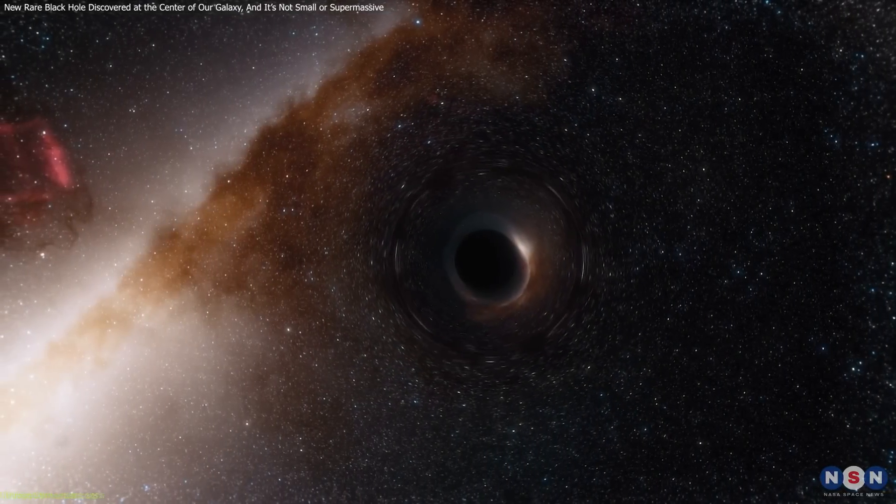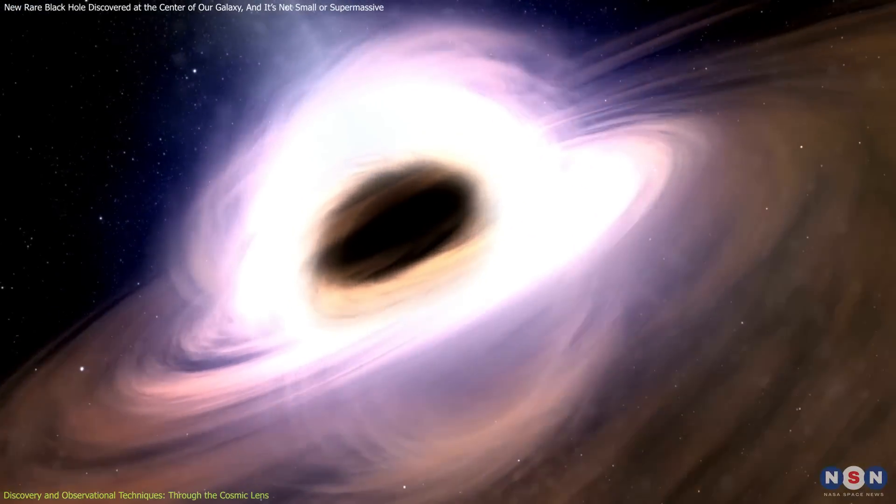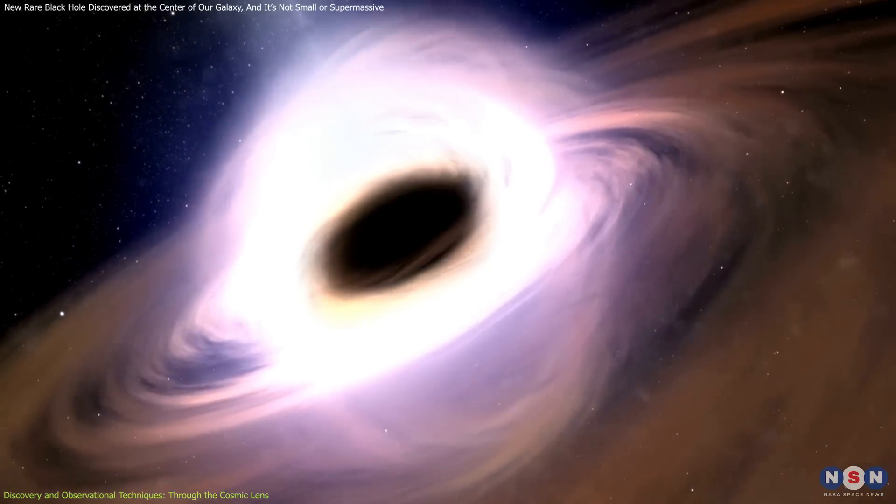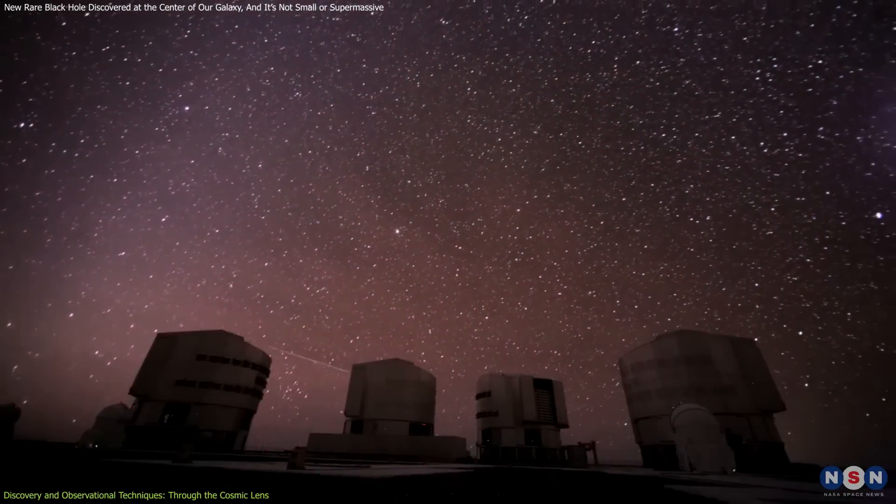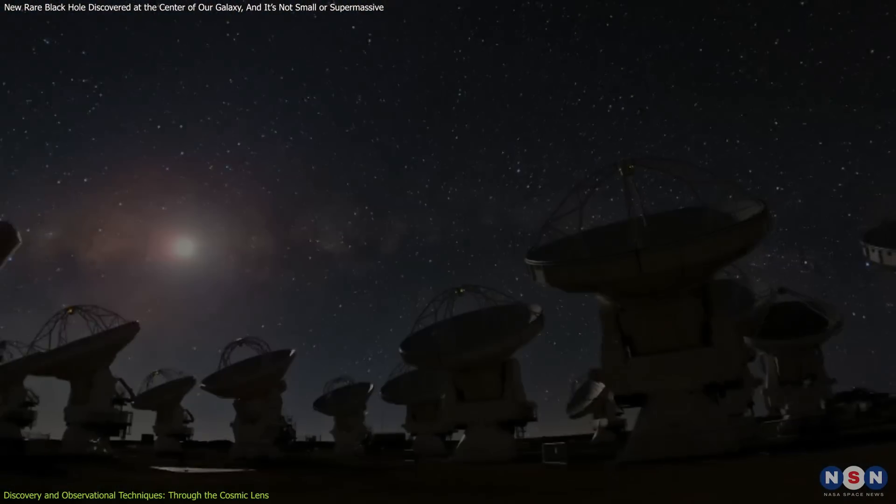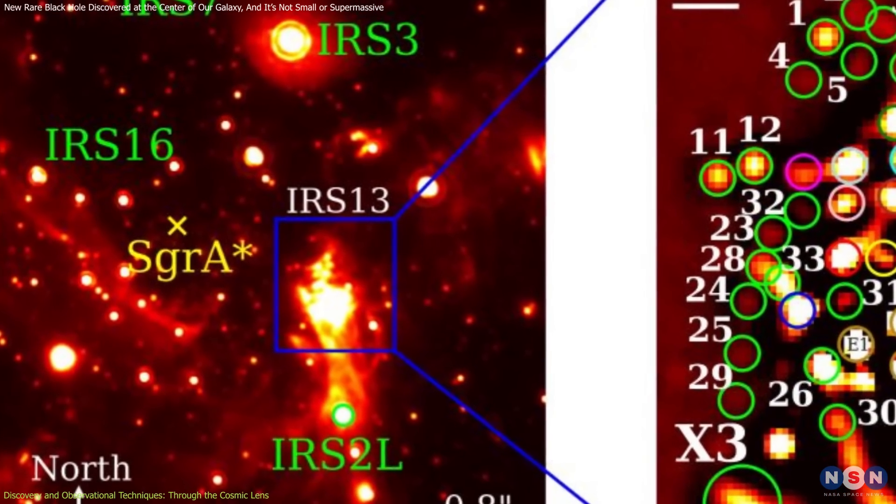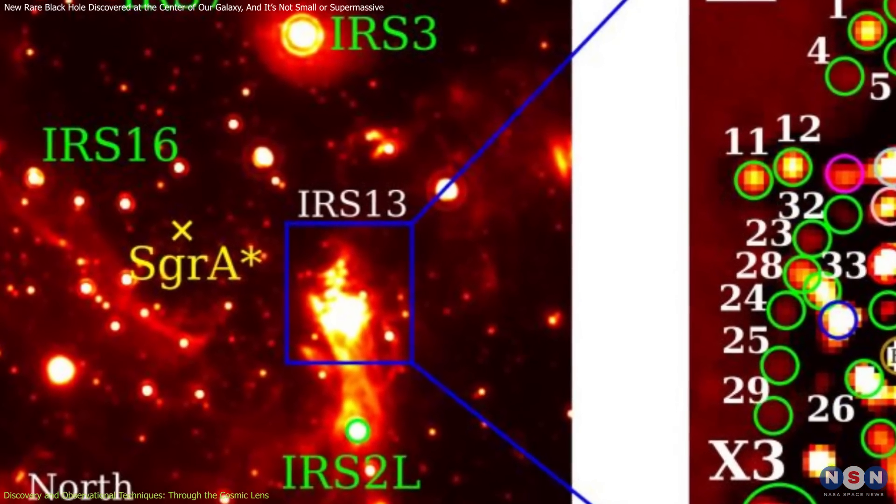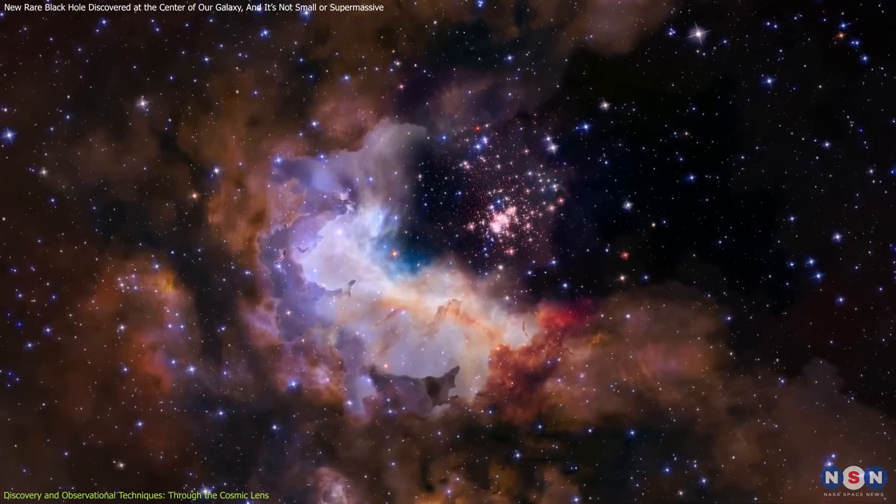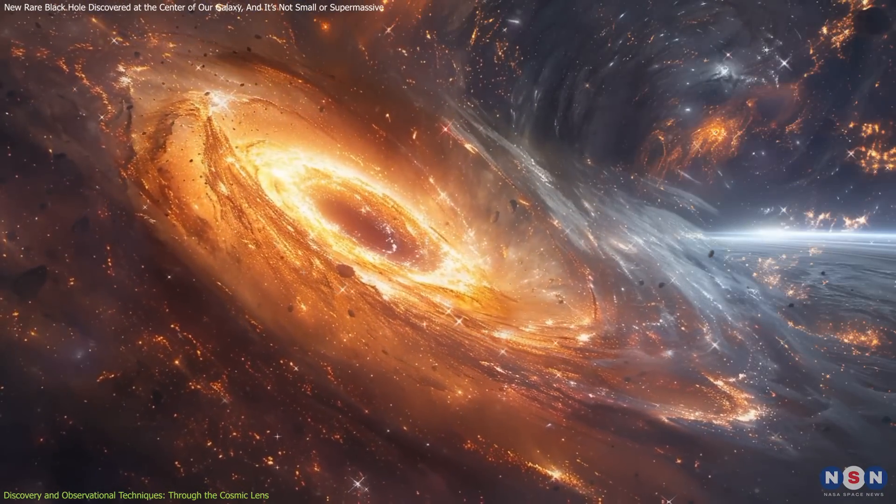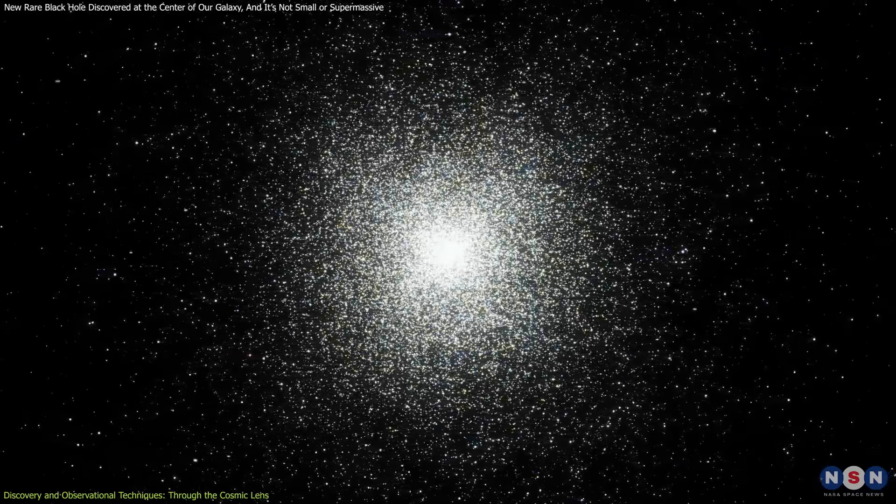The quest to discover an intermediate-mass black hole near the center of our galaxy unfolded through innovative technology and sharp astronomical detective work. Utilizing some of the most advanced telescopes in the world, such as the Very Large Telescope, ALMA, and CHANDRA, astronomers probed the depths of the IRS-13 star cluster, positioned near the supermassive black hole Sagittarius A star. In this dynamic and tumultuous region, governed by the intense gravitational pull of Sagittarius A star, the IRS-13 cluster emerged as an anomaly.